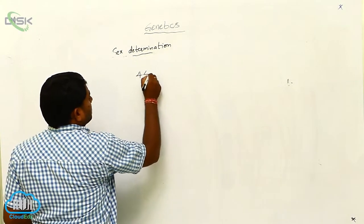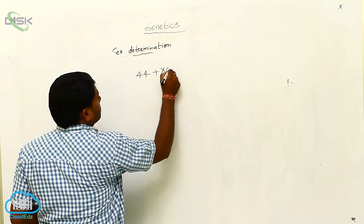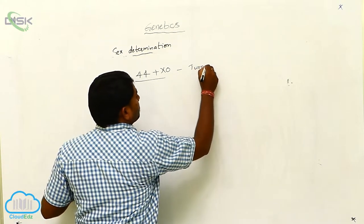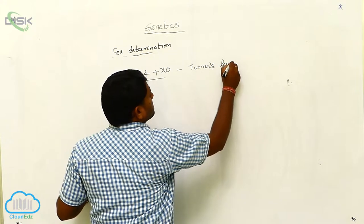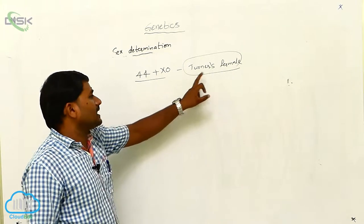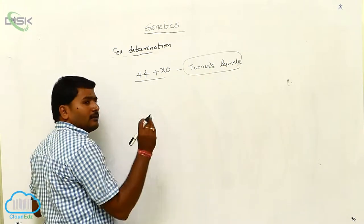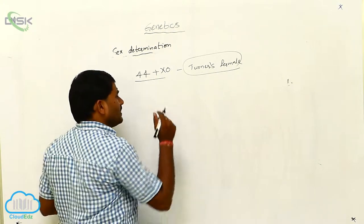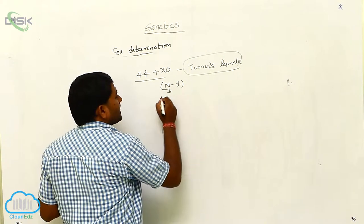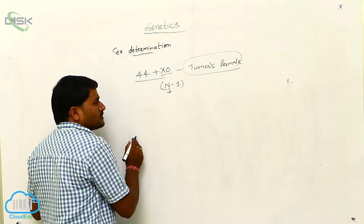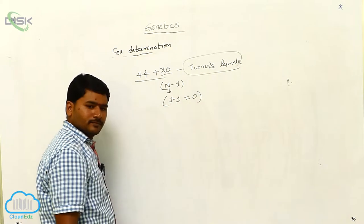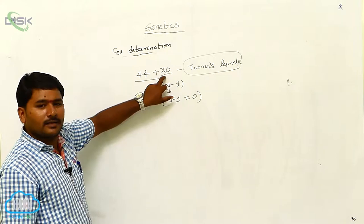Consider 44 plus X0 — this is Turner's syndrome female, a genetically disordered female. Using the N minus 1 principle, where N is the number of X chromosomes: there is only 1 X chromosome, so 1 minus 1 equals 0. Females without a bar body are Turner's females.